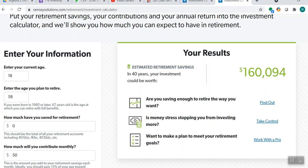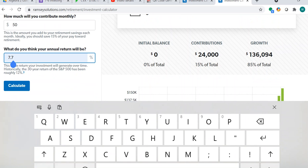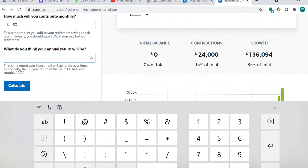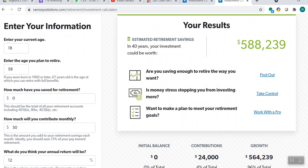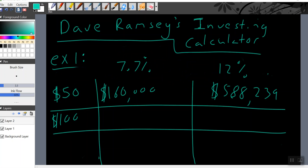What if this was at a 12% return, which is the historical return that you would get? Well, at a 12% return, you would be making $588,239. Think about this, guys. You're going into retirement and you have almost half a million dollars only because you invested $50.